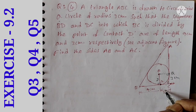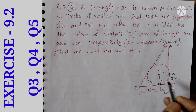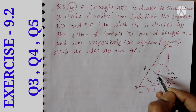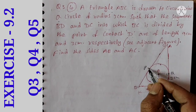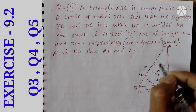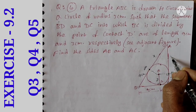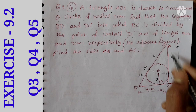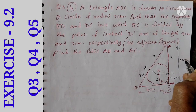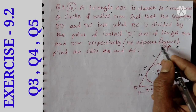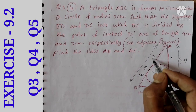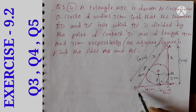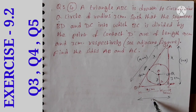BD = 9 cm, so BP = 9 cm. Let AP = AQ = x cm. Then AB = 9 + x and AC = 3 + x. Since BC = BD + DC = 9 + 3 = 12 cm.